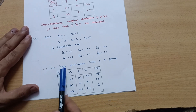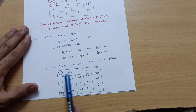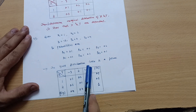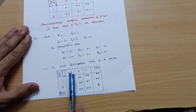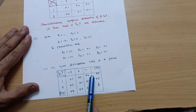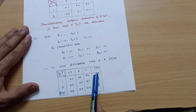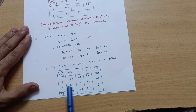Now write down the joint distribution table. You need to sum up the probabilities row-wise. For the first row: 0.1 + 0.2 + 0.2 = 0.5, which we call f(xi). This gives the marginal probability for x1.